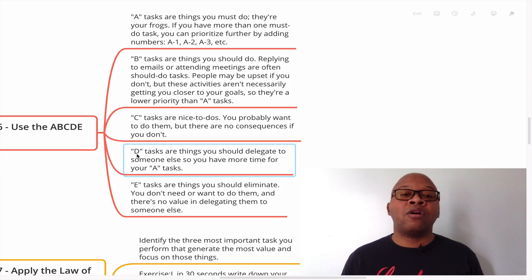Now C tasks are nice to dos. You probably want to do them, but there are no consequences if you don't. D tasks are things you should delegate to someone else so you have more time for your A tasks. And then E tasks are things you should eliminate. You don't need or want to do them and there's no value in delegating them to someone else.